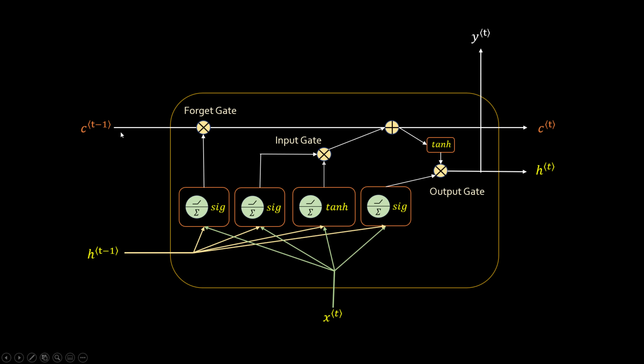Now if you think about the long-term memory — look at this highway line. It has two things: the forget gate and the input gate. The forget gate will help you forget things like 'samosa' when 'pasta' comes in. The input gate will add new meaningful things into memory. If it is a movie review, you want to add words like 'horrible' or 'amazing' or 'beautiful' — there are so many words you don't care about. That's what this LSTM will do.